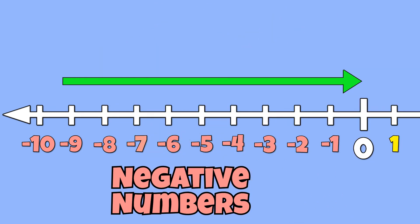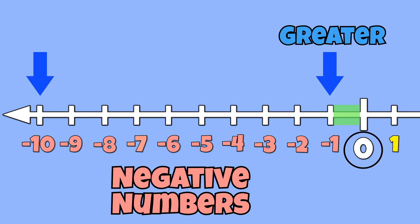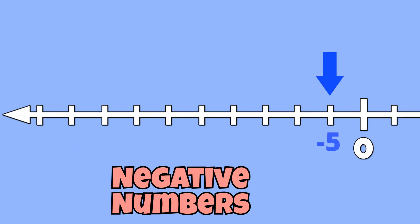For example, negative 1 is greater than negative 10 because negative 1 is closer to 0. Negative 5 is greater than negative 15 because negative 5 is closer to 0. Negative 1 is greater than negative 100 because negative 1 is closer to 0.